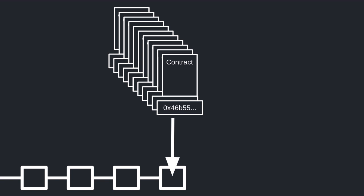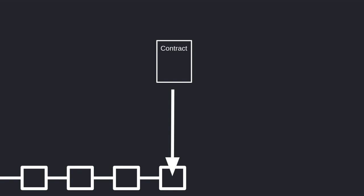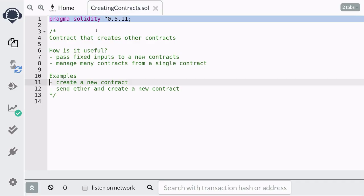One way to keep track of all the contracts you deployed is to store the addresses off-chain in a database. Another way is to have a contract that creates other contracts and store the addresses of these contracts inside the contract that created them. I'll show you two examples of how to create a new contract from inside another contract.